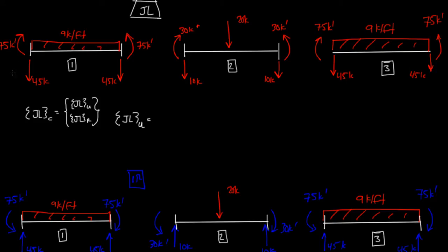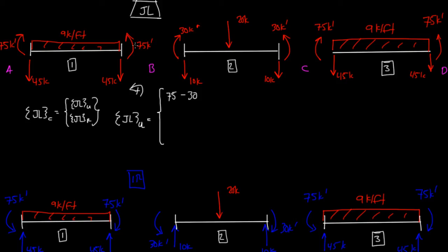So our unrestrained — this side was A, this was B, this was C, and this was D. Our unrestrained at B is going to be 75, you have a positive 75 and then a minus 30. Our sign convention is positive in counterclockwise notation. So we have a 75 kip-foot moment going in the positive direction, and then negative 30 because it's going in the opposite direction, so we have 75 minus 30. Then our second unrestrained degree of freedom was here at C — we have a positive 30 and a minus 75, so we have positive 30 minus 75.